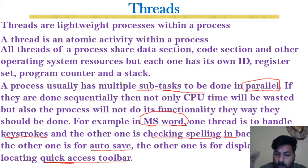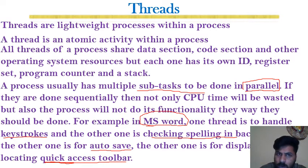These are multiple controls of execution that are almost independent of each other and atomic — such as dealing with keyboard input, checking spelling against the dictionary in the background, the auto-save option that periodically saves the file content, and locating the quick access toolbar. All these things are basically threads of a single process.